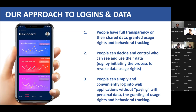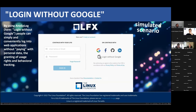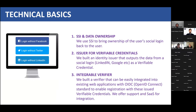In short, our approach is 'Login without Google button.' By using Anosolock, people can simply and conveniently log into web applications without paying with personal data, the granting of user rights, or behavioral tracking — and they have full control over their personal data. On the technical side, we use the self-sovereign identity (SSI) concept, implemented using the Hyperledger Aries project, to bring ownership of social login back to the user.